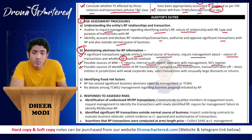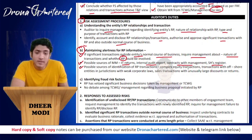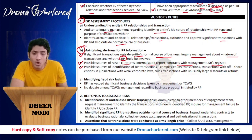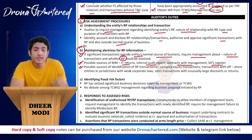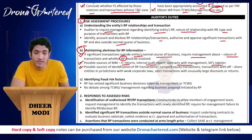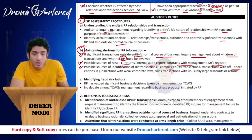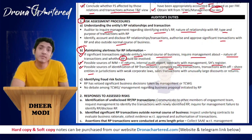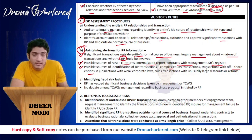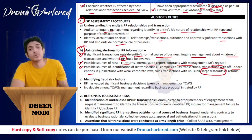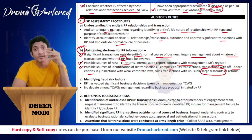Third, possible sources for identifying related party transactions include: complex equity transactions, any transactions with offshore entities in jurisdictions with weak corporate laws, and sales transactions with unusually large discounts. For instance, many journal entries passing through one account to another, or a sister concern in a jurisdiction without strong laws, or providing large discounts may indicate a related party transaction.